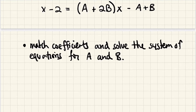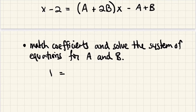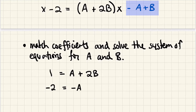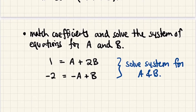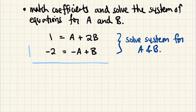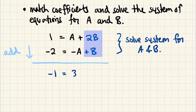Matching coefficients: the coefficient of x on the left is 1, which must equal A plus 2B on the right, giving us 1 = A plus 2B. The constant on the left is negative 2, which equals negative A plus B. We now have a system of equations. Adding them together: 1 minus 2 equals negative 1, the A's cancel, and we get 3B, so B equals negative one-third.